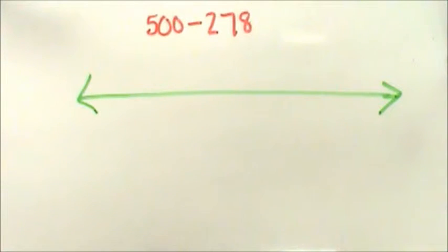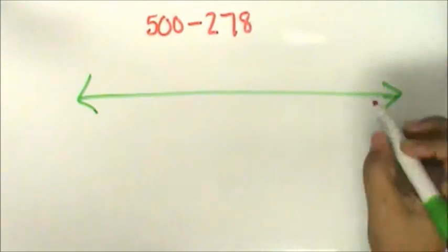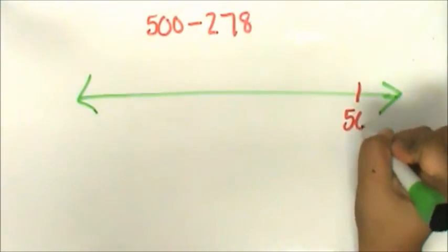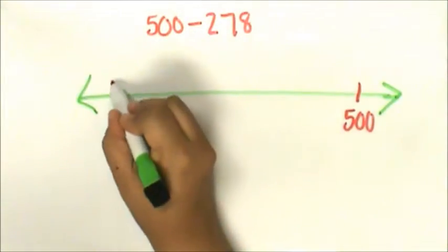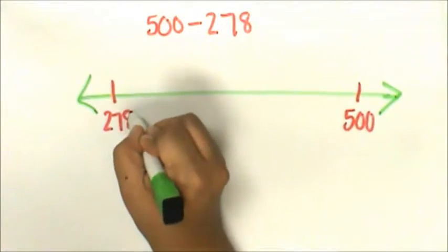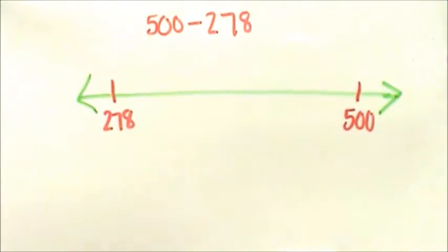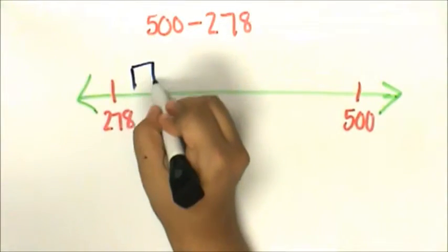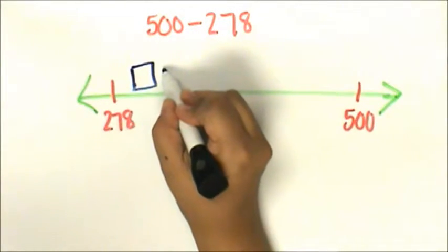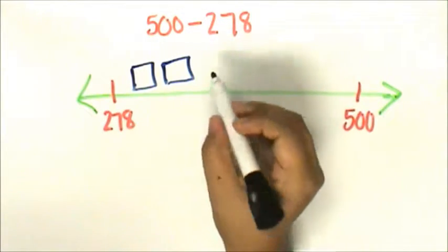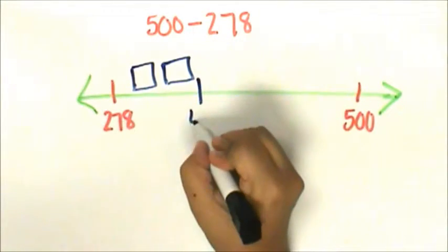Let's try the problem again but this time using a pictorial representation. Jessica had 500 buttons. She gave Kelly 278 buttons. 100 more is 378. 200 more is 478.